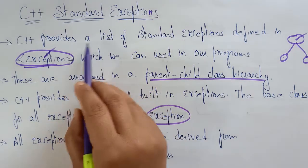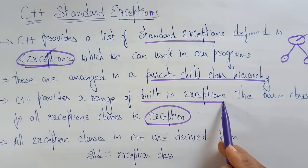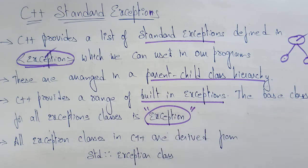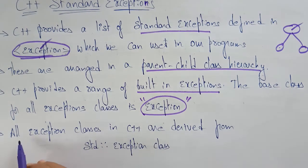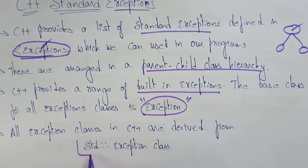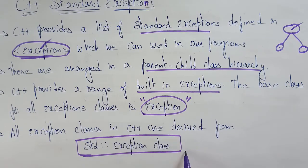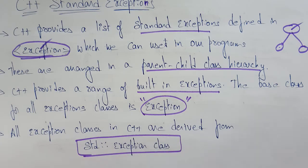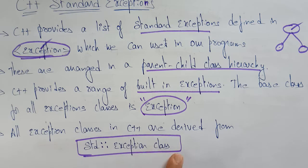The base class for all exceptions is 'exception' only. It also provides standard exceptions and built-in exceptions, but you have to remember that 'exception' is the base class — that is the parent. All exception classes in C++ are derived from std::exception class. STD is the namespace where you declare it — just like a class declared in the namespace, STD exception class.